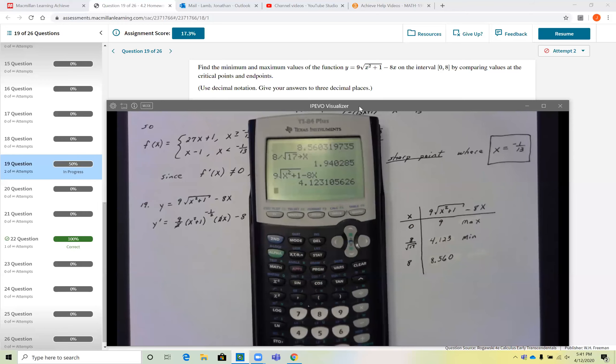Now clearly the minimum value here is 4.123. The maximum should be 9. The answer that Achieve is currently wanting for the maximum for this problem is the 8.56. That's wrong.